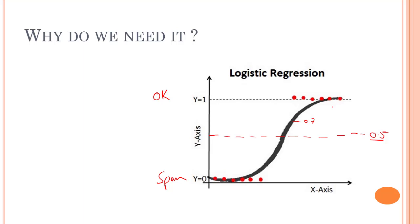If the estimated probability is greater than 50 percent, then the model predicts that the instance belongs to the positive class. Otherwise, it predicts that it belongs to the negative class. This is essentially what we know as a binary classifier—we have two classes: zero for spam emails and one for okay emails.